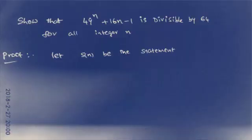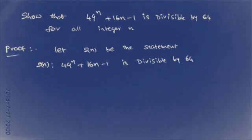Welcome to my channel. If you like my video please subscribe. The question is: show that 49^n + 16n - 1 is divisible by 64 for all integer n. We'll prove this with induction. Let S(n) be the statement: 49^n + 16n - 1 is divisible by 64.